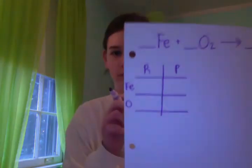The reactants and products are iron, which is Fe, and oxygen, which is O. So the chart looks like that.